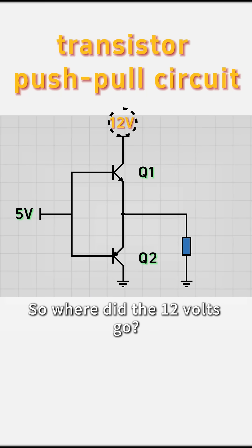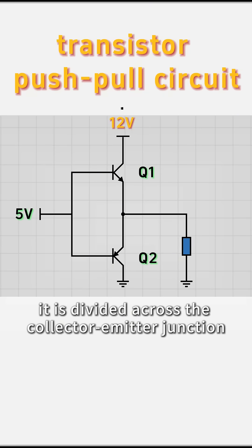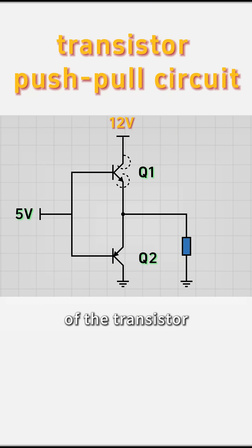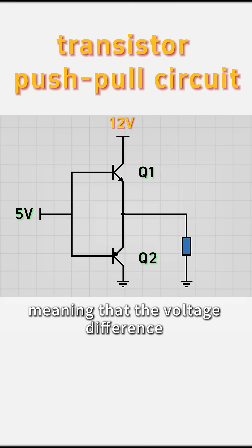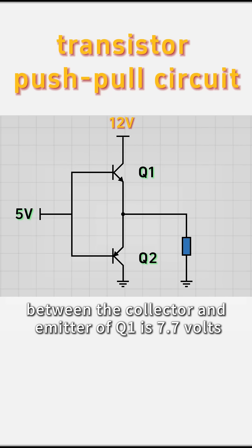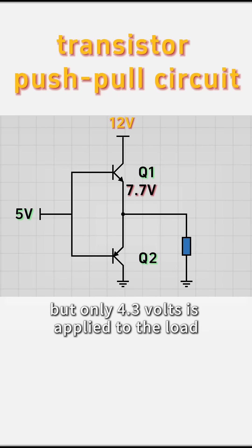So where did the 12 volts go? Actually, it is divided across the collector-emitter junction of the transistor, meaning that the voltage difference between the collector and emitter of Q1 is 7.7 volts, but only 4.3 volts is applied to the load.